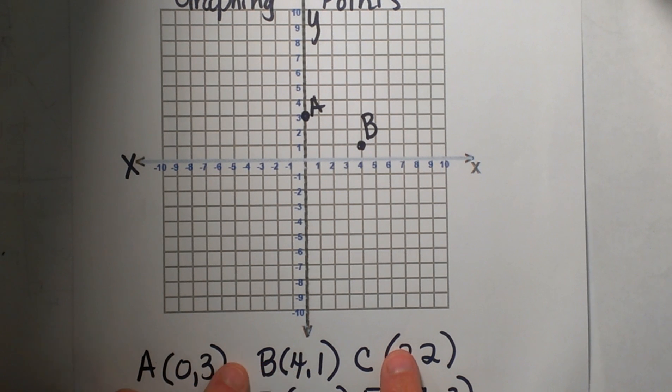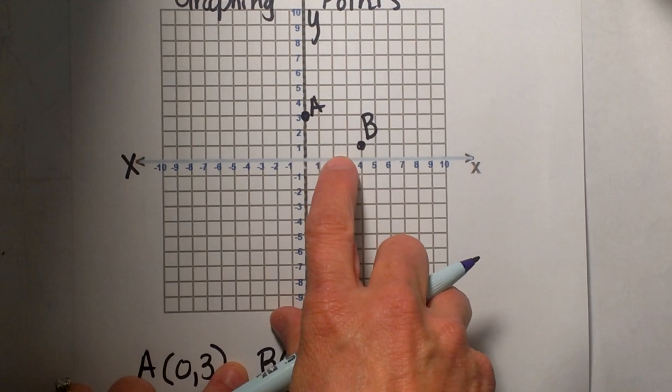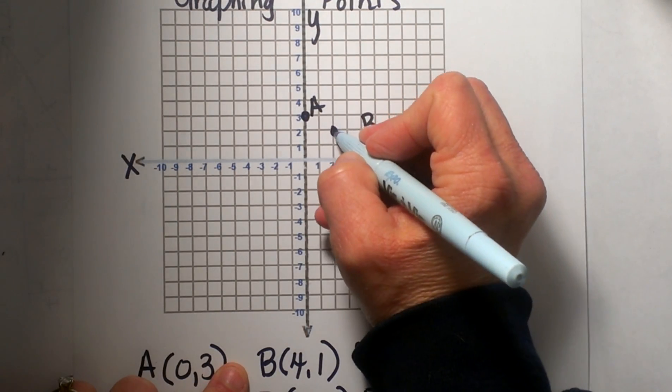Point C is a positive 2, positive 2. So from the origin I count to the right 2 and up 2. So that would place C right here.